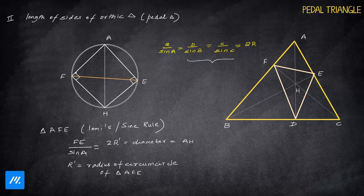But which R? In quadrilateral AFHE, angle AFH is 90 degrees and angle AEH is 90 degrees, so AH is the diameter. So this means AH times sine A will give you the value of FE. So if we know the value of AH, our answer is solved. Let's come to the main triangle. In triangle ABC, AH is part of AD, and AD is the altitude.